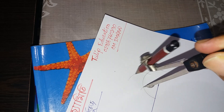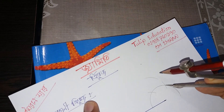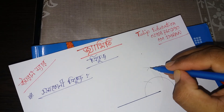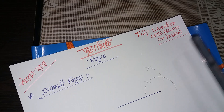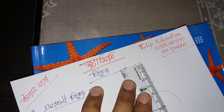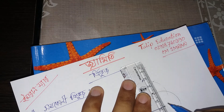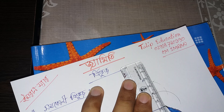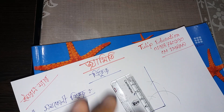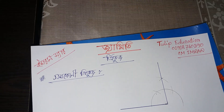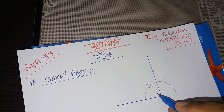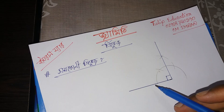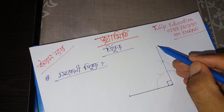Here, draw another angle. From here, draw another arc. When we draw another arc from this point, we get a midpoint. Through this midpoint, if we draw a line, the angle we draw will actually be 90 degrees.